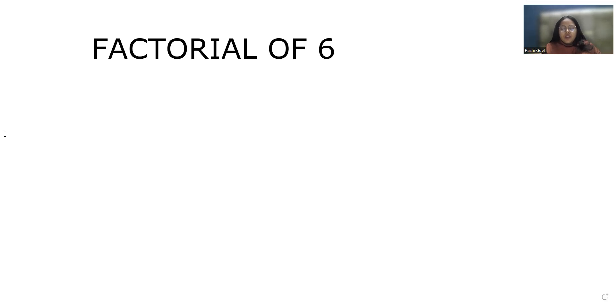Factorial is used to find how many ways things can be arranged or ordered. In simple terms, you multiply a number by every number below it till one.